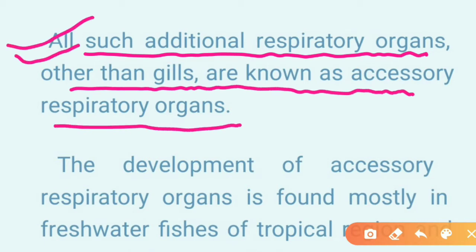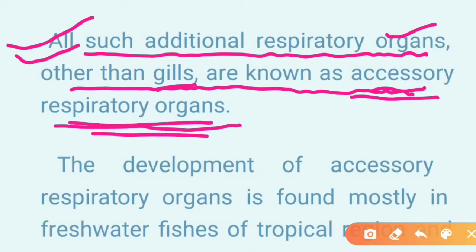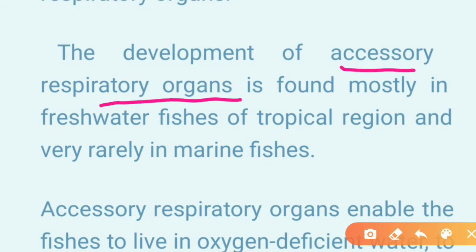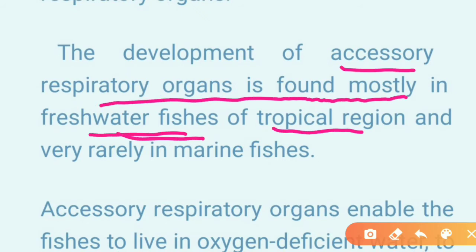By definition, gills are the main respiratory organs, and the extra respiratory organs are known as accessory respiratory organs. The development of accessory respiratory organs is mostly found in freshwater fishes in the tropical region.